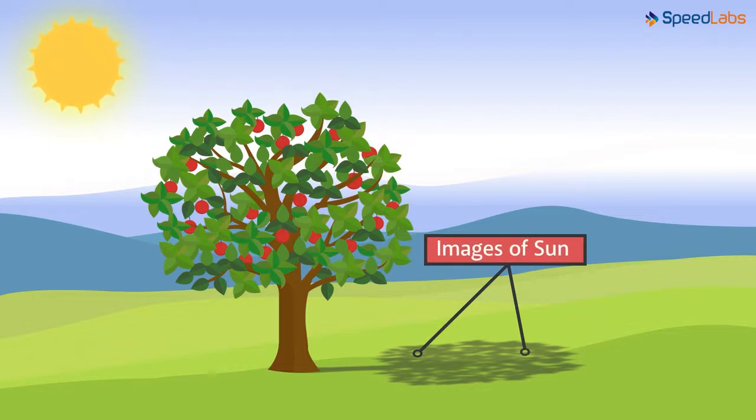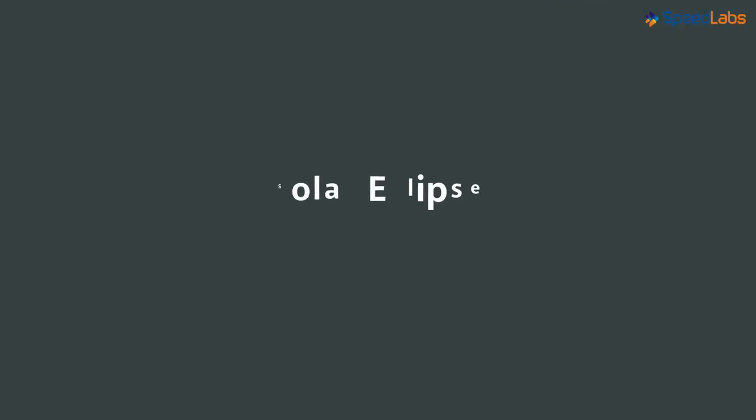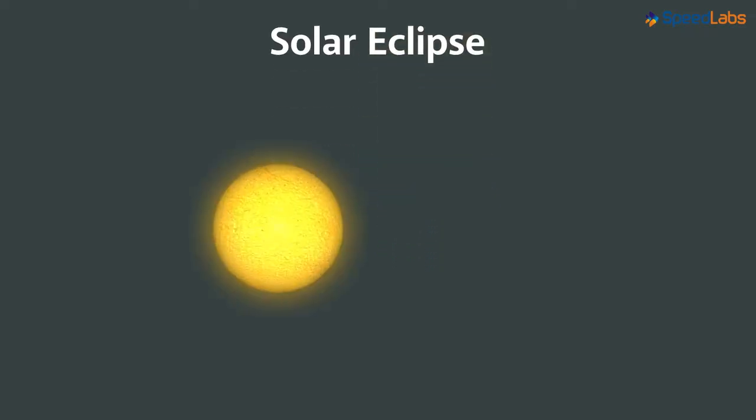Just one last thing before we end this video, and you are really going to like it. You must have heard of something known as solar eclipse. Do you know anything about it? Meaning of eclipse is similar to the word blocking of light, but we reserve this word for the celestial objects like the sun and the moon.